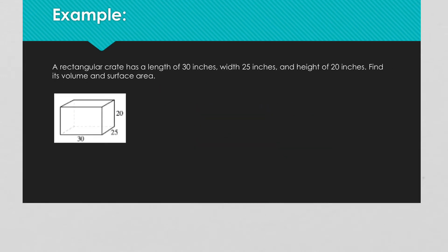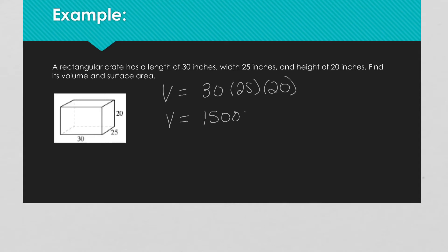For this problem it has a length of 30 inches, a width of 25 inches, and a height of 20 inches. Find its volume and surface area. Volume is length times width times height, and whenever I multiply that I get that the volume is 15,000 — don't forget, volume is in cubic inches.